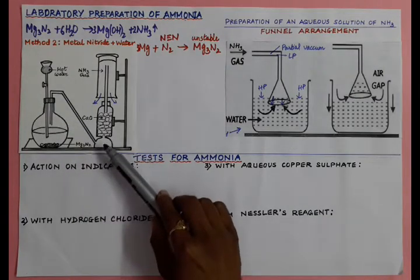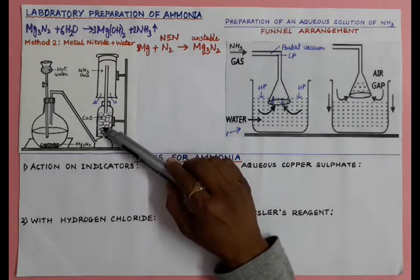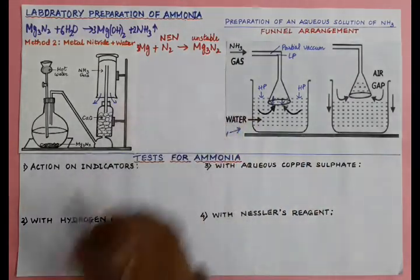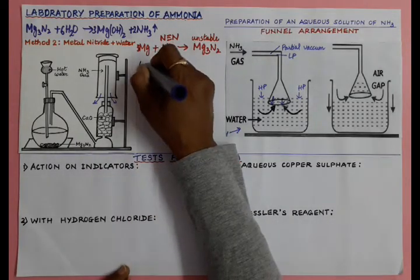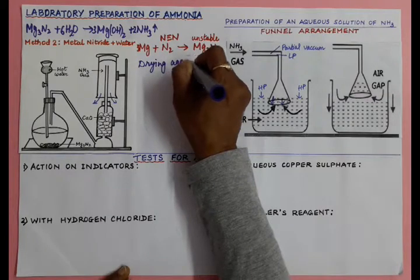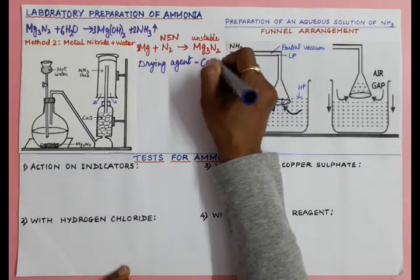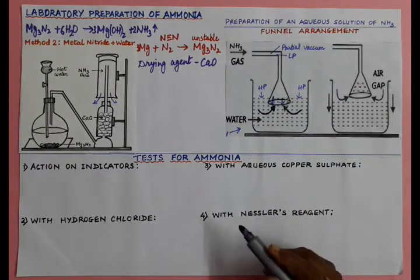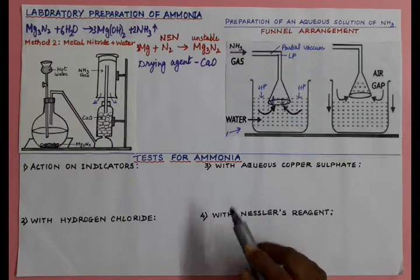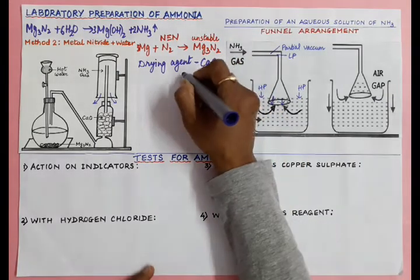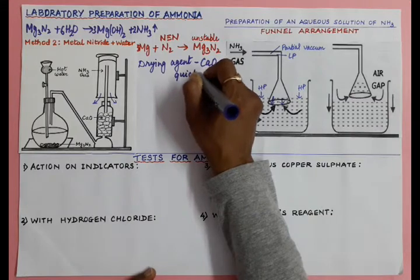Ammonia gas travels from the delivery tube to the drying tower, where the drying agent is calcium oxide (CaO). We use calcium oxide because ammonia is basic in nature and calcium oxide is also basic, so they do not react with each other. The common name of calcium oxide is quicklime.